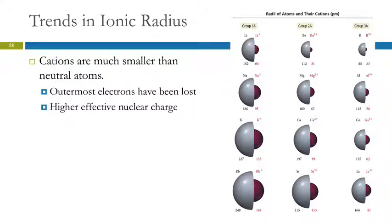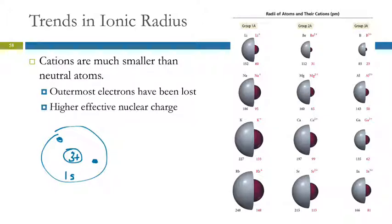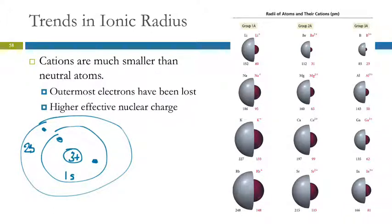Not only that, but you also have a higher effective nuclear charge, which pulls electrons in even more. Lithium has three protons, two electrons in the 1s level, and one electron in the 2s level. That valence electron experiences an effective nuclear charge of +1 due to shielding. When we remove it to make the ion, the remaining 1s electrons now experience the full +3 nuclear charge and are pulled in much farther.